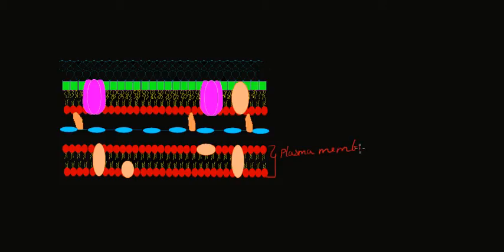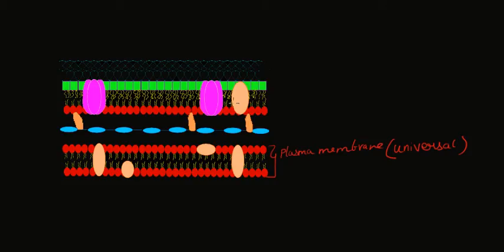This is the plasma membrane. Now, the plasma membrane is not a part of the gram-negative bacterial cell wall. A plasma membrane is present in all cells irrespective of whether the cell is gram-positive or gram-negative. Therefore, the structure of the plasma membrane is universal.